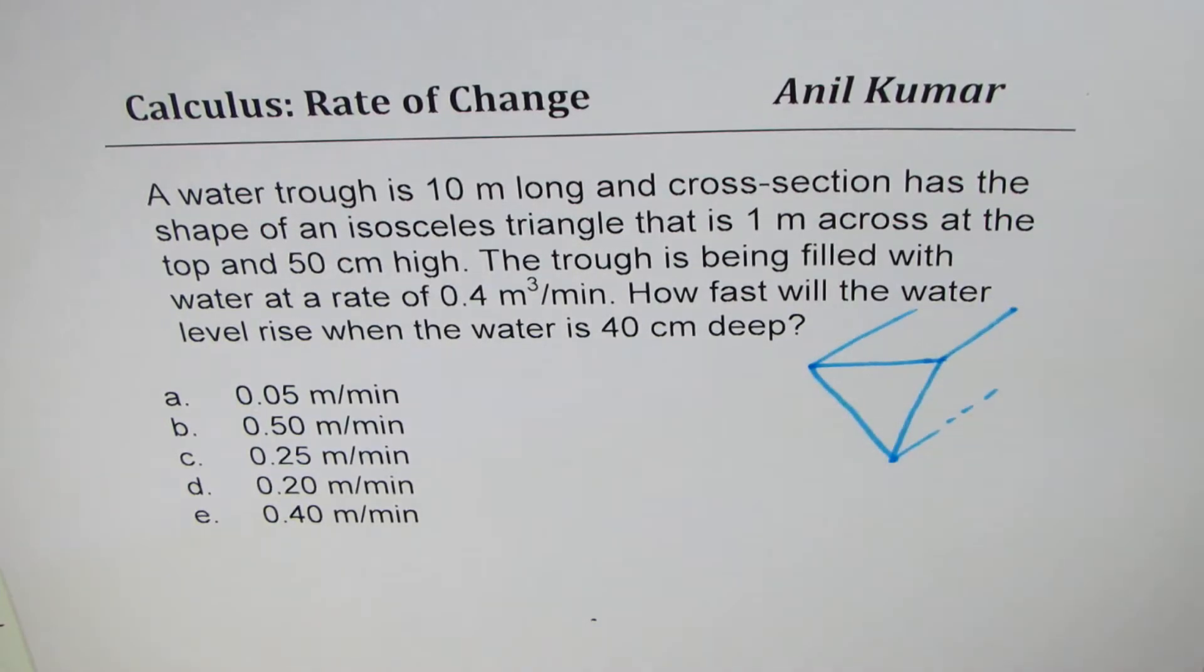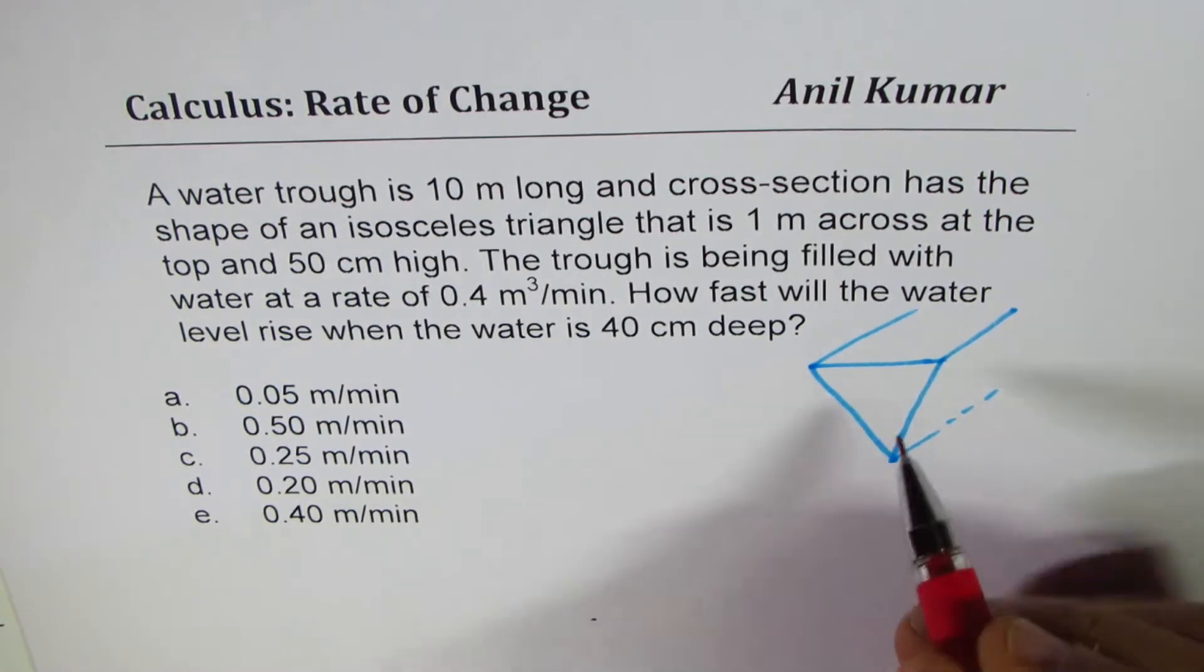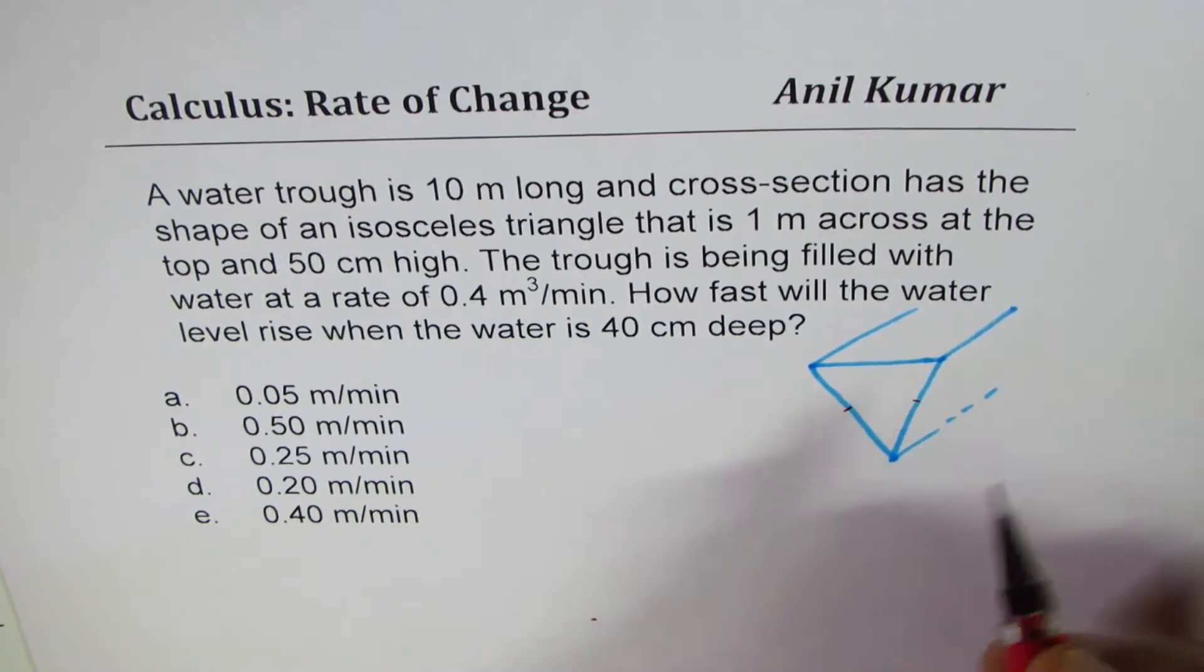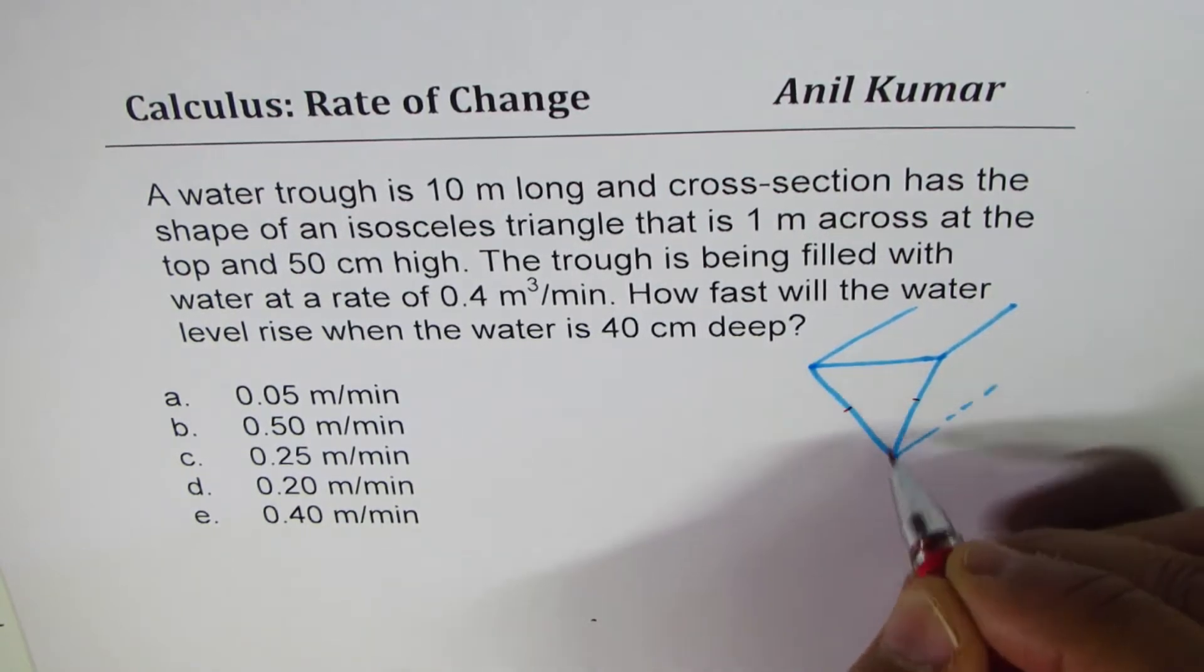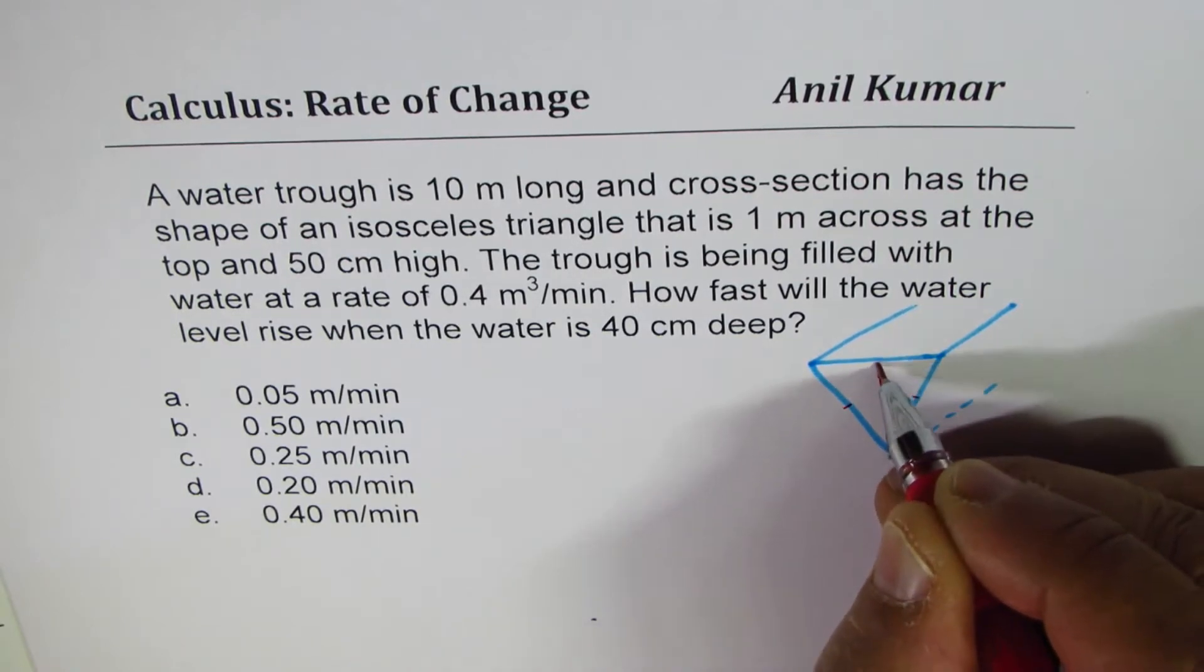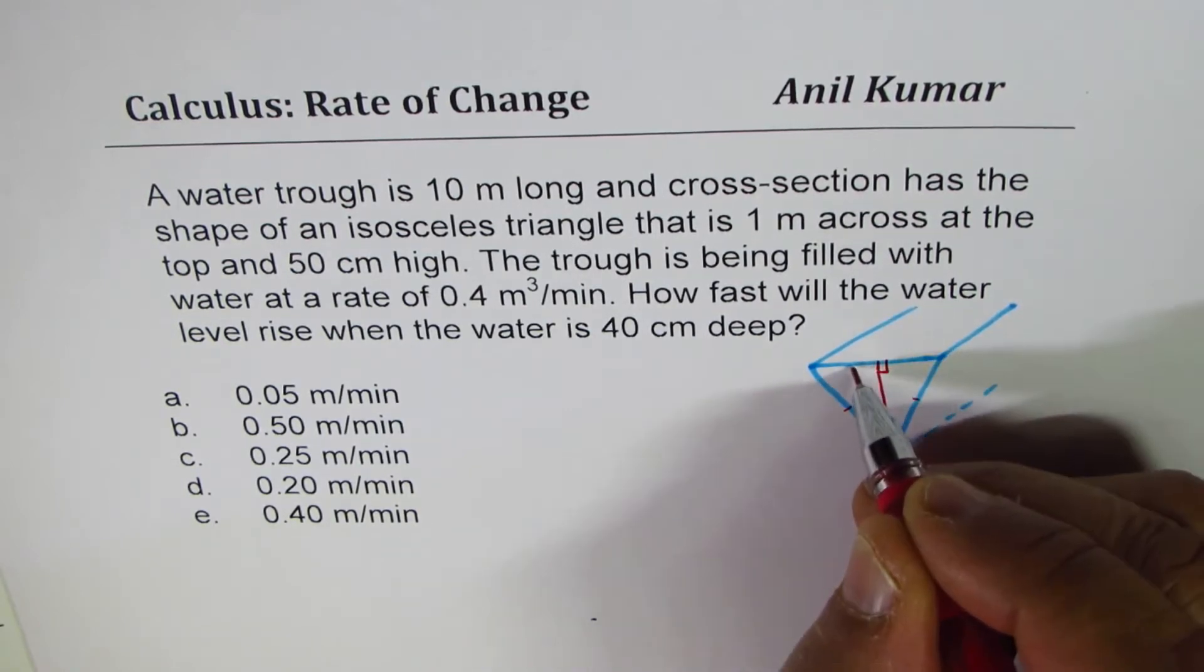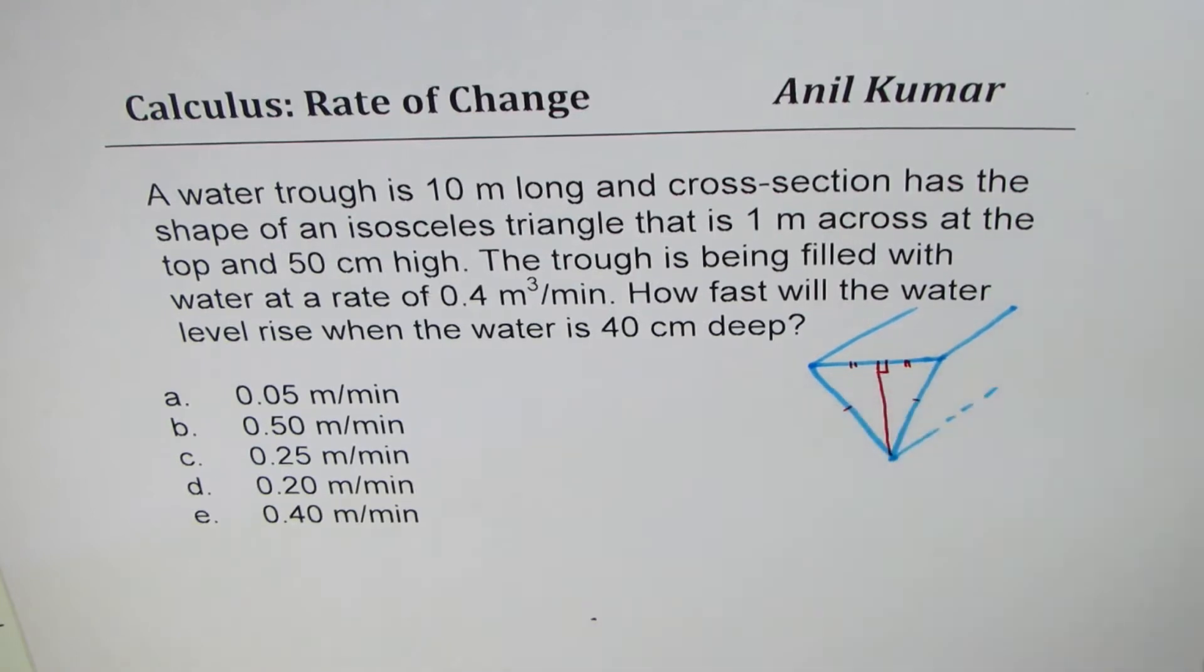That is an isosceles triangle where these sides are equal. So if these sides are equal and if I draw a perpendicular from here to the base, we are considering that to be the base, it is going to split this base into equal parts.